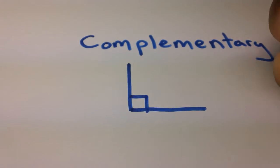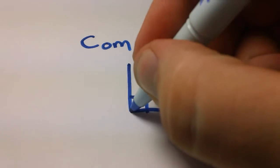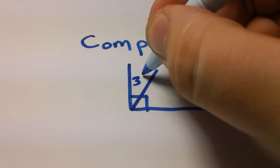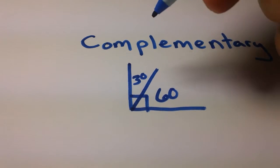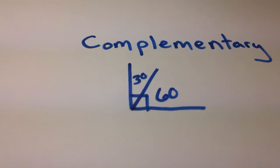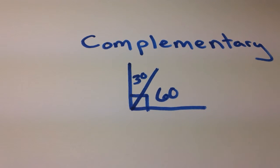So if we had this 90 degree angle, complementary is essentially saying we have these two angles. Let's say this is a 30 and this is a 60. These two angles together make 90 degrees, 30 plus 60, right? So those two angles are complementary.